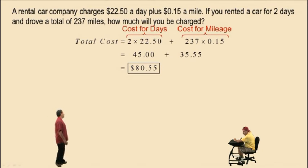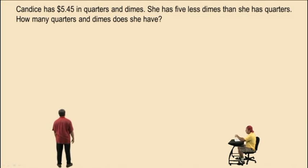Let's do another one here. Let's do one of those famous coin problems. Okay, Charlie, pay attention. Candace has $5.45 in quarters and dimes. So part of these coins are quarters, and part of them are dimes. She has five less dimes than she has quarters. So if she has 20 quarters, that means she has 15 dimes. How many quarters and dimes does she have? Typical coin problem. They show up all the time. Somebody asked me this this morning, by the way. Never mind, Charlie.